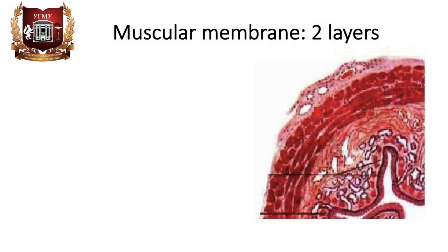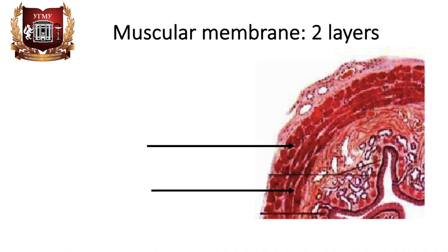The muscle membrane is located in two layers: the outer longitudinal and inner circular. In the upper third of the esophagus, both layers are formed by striated muscle fibers, and in the middle and lower thirds of the esophagus they consist of smooth muscles.